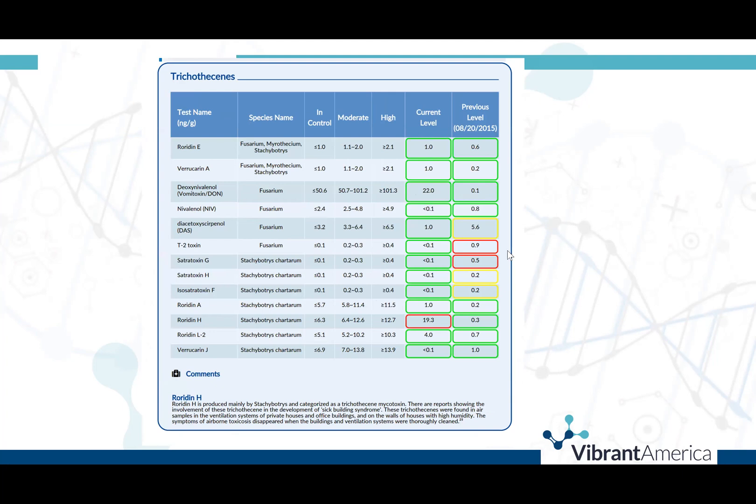On the last page, we have the trichothecenes. The trichothecenes are a very large family of chemically related mycotoxins produced by various species. These mycotoxins are commonly found on food such as wheat, oats, and maize, but can also be produced by molds and fungi which can grow indoors on water-damaged materials. They can also be absorbed through dermal contact. Trichothecenes accelerate the production of reactive oxygen species in cells and inhibit protein synthesis in a number of ways, leading to cell damage or even cell death.